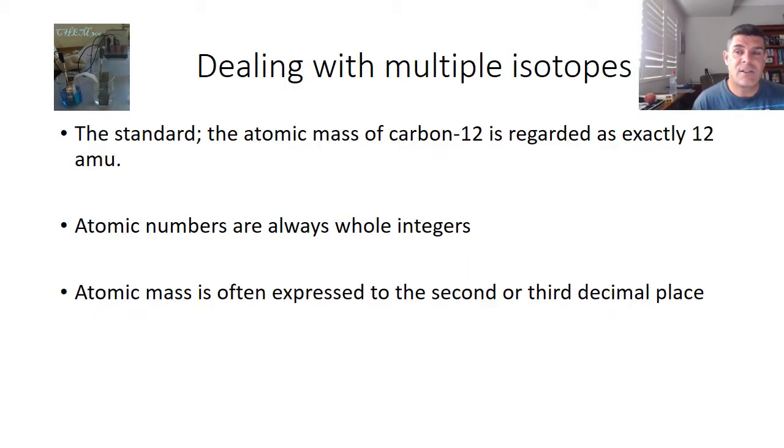One of the things that you may have noticed is that we have some anomalies in our periodic table. While our atomic numbers are whole integers, 1, 2, 3, 4, 5, the mass numbers are not.